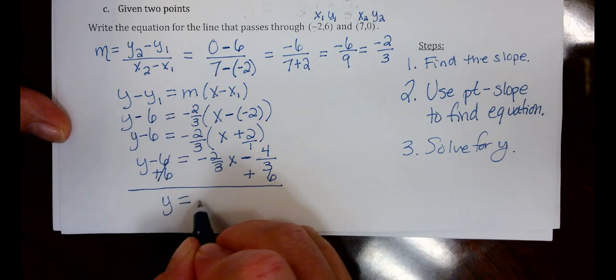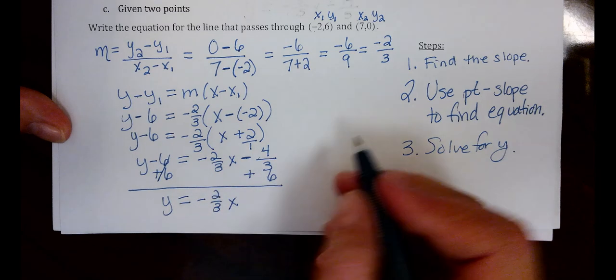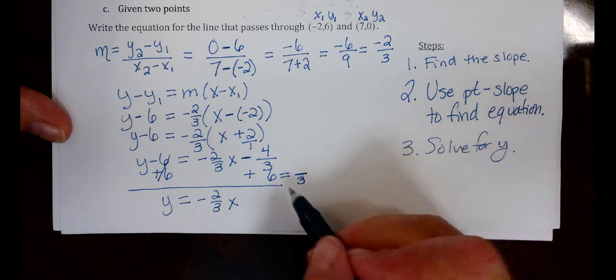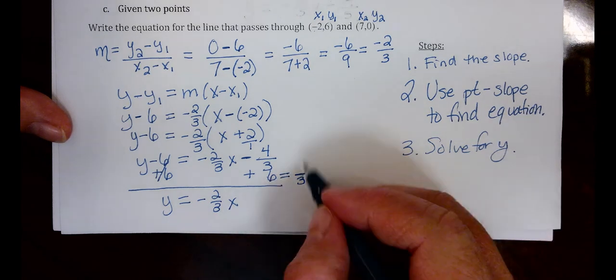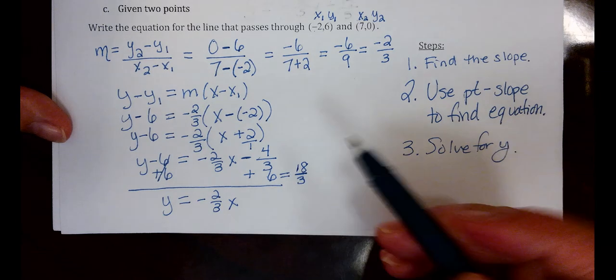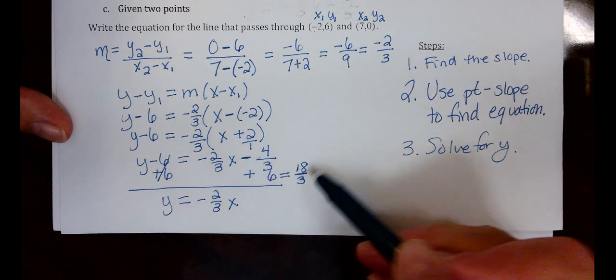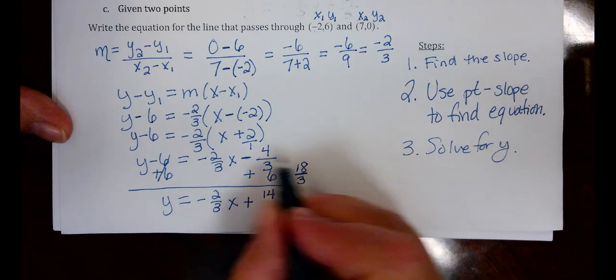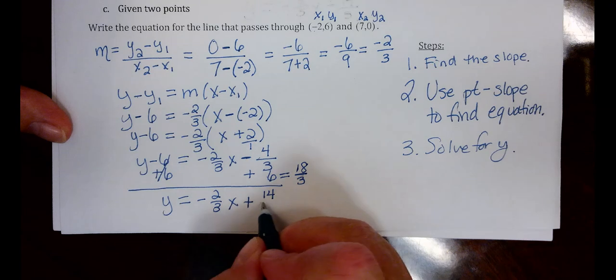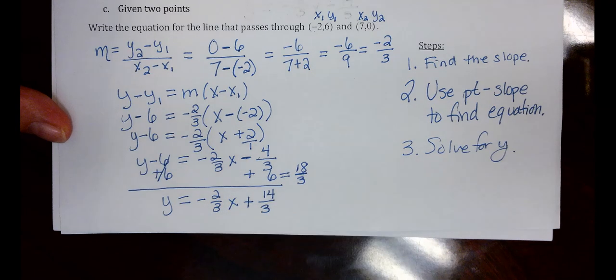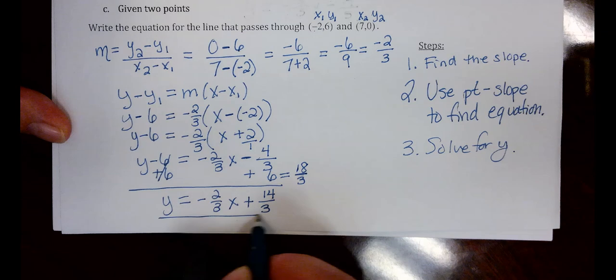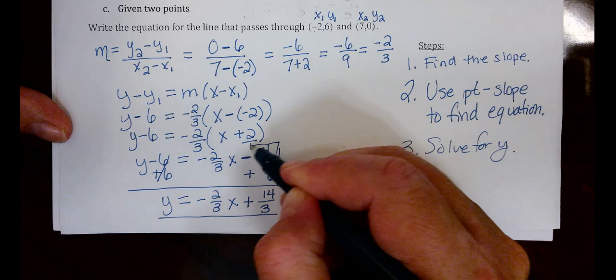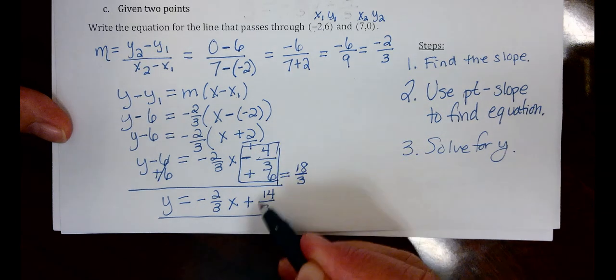Y equals negative 2 thirds X. And this 6, again, we need it to have the denominator of 3. So 3 times 6 gives us 18. And we're saying negative 4 plus 18 gives us 14. This is essentially 18 minus 4. And we have the same denominator of 3. So this is our equation of the line given 2 points. Again, you could put this part in your calculator and simplify to get our fraction here if you don't want to do this by hand.